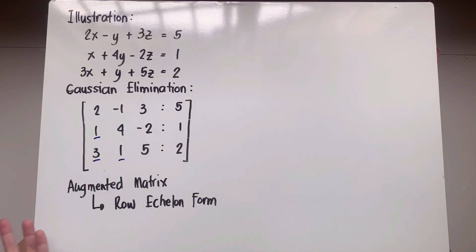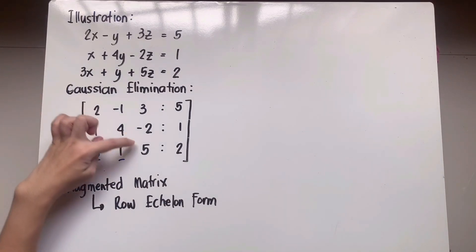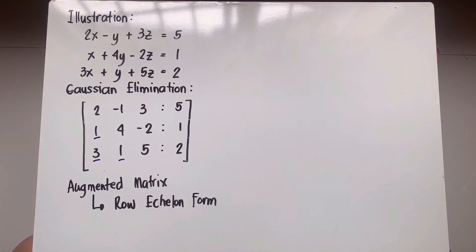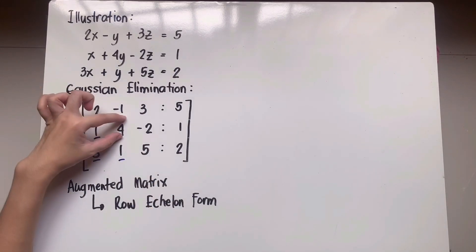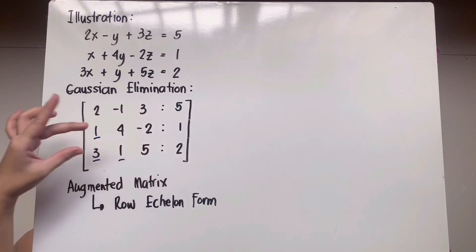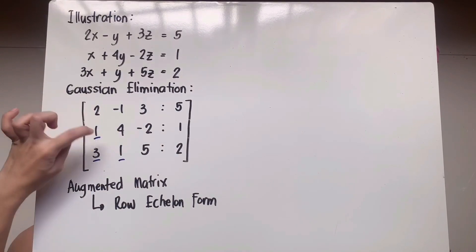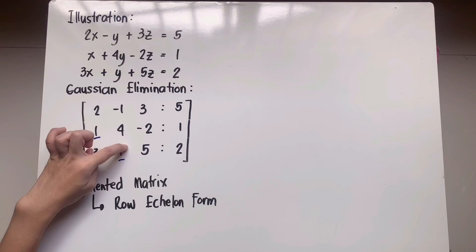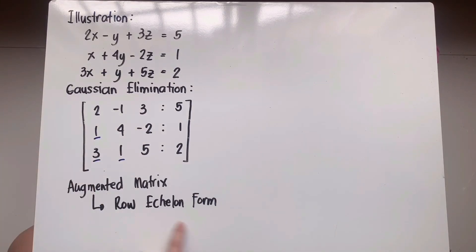The majority of reference books require that for row echelon form, the diagonal leading entries should be equivalent to 1, although some books do not require this. Now, we will create formulas to make certain entries zero to complete the row echelon form. If these entries become zero, the augmented matrix — without the constant matrix — becomes an upper triangular matrix.